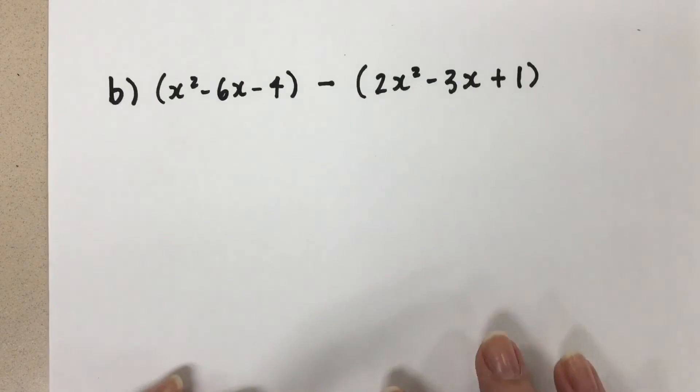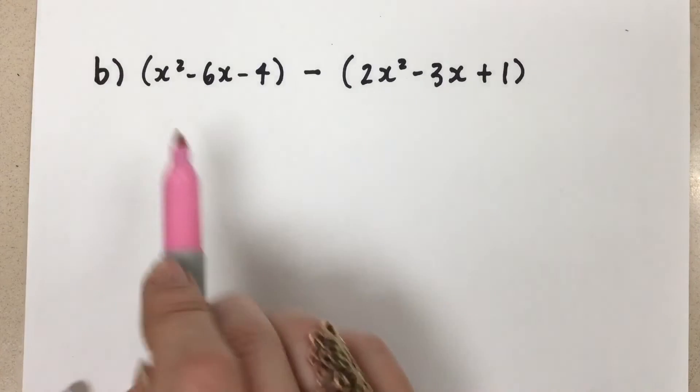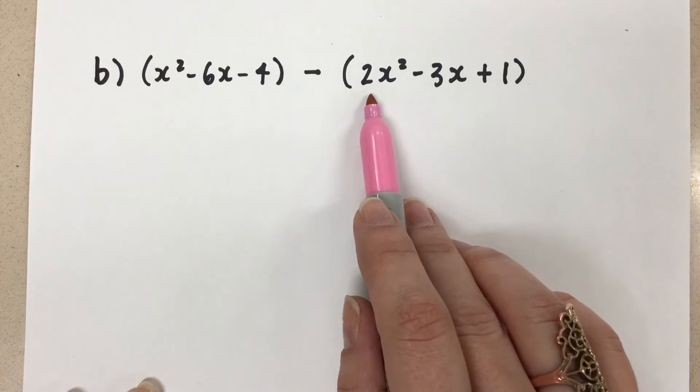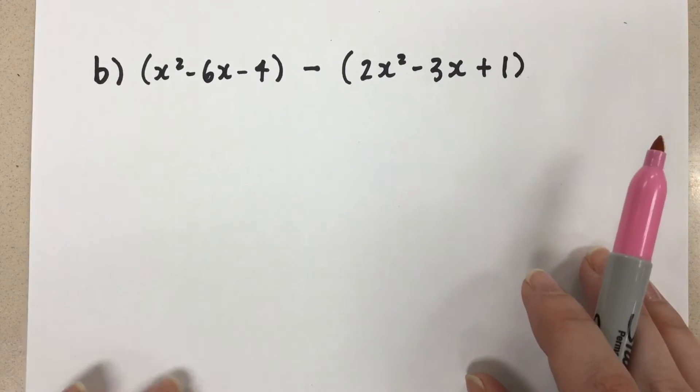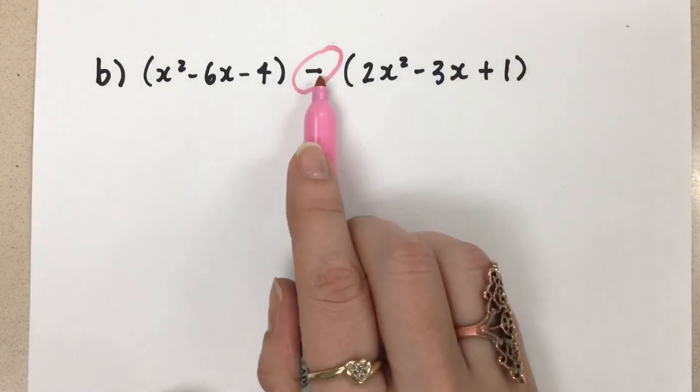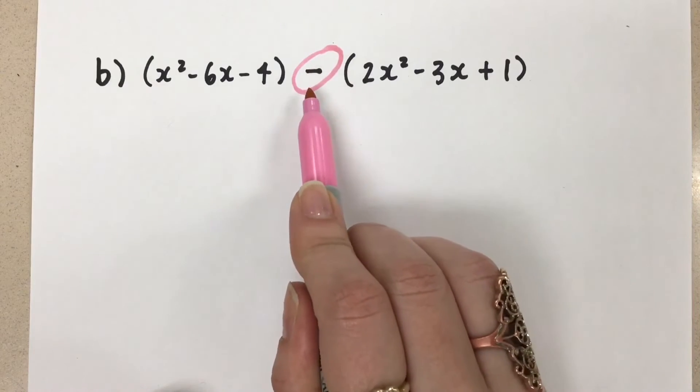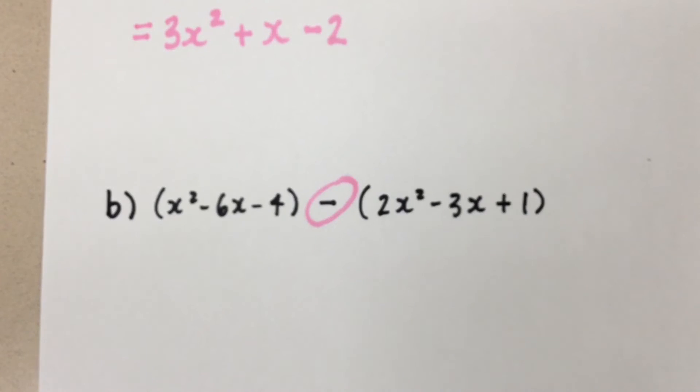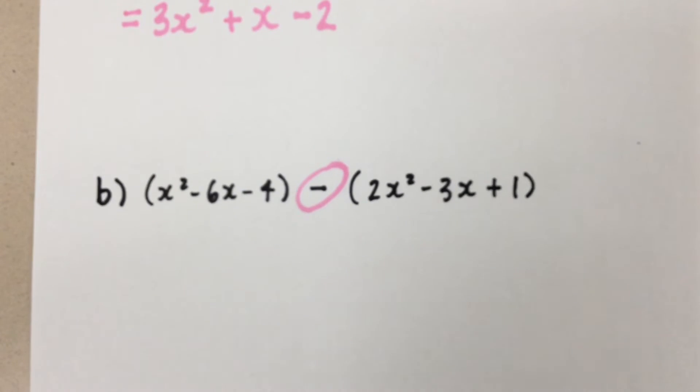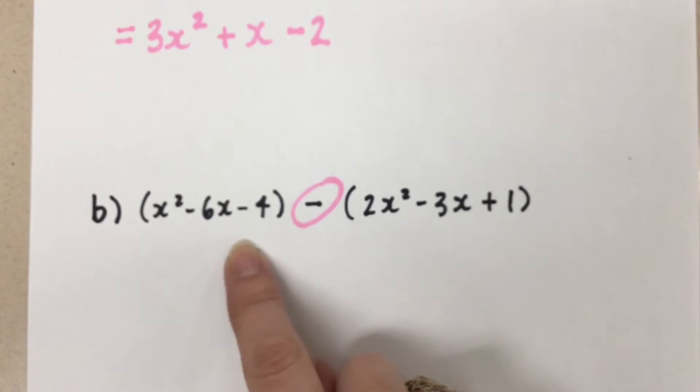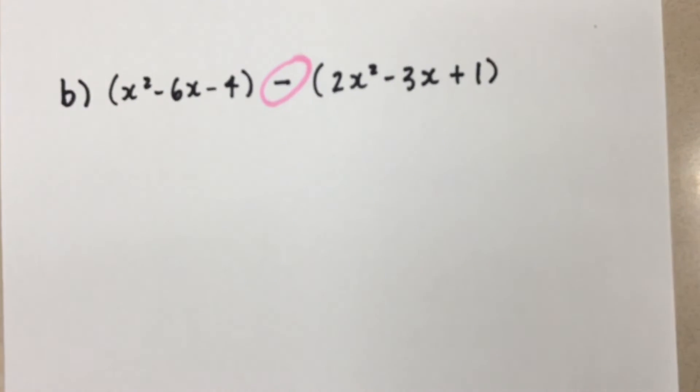So now we have this question: x squared minus 6x minus 4 minus the quantity 2x squared minus 3x plus 1. So when we do this with that minus in between now, we have to make a little bit of a change. That minus there means that we're going to subtract this entire polynomial from this polynomial. So we want to start this off in the same way that we would start the adding polynomials like we did up here.